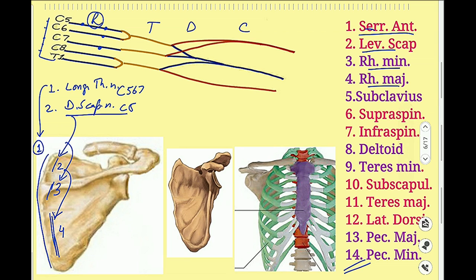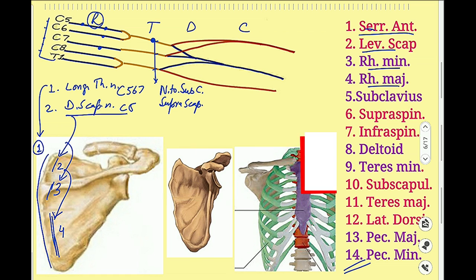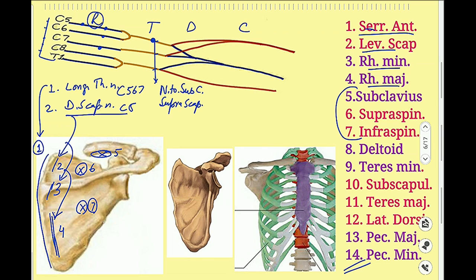From the trunks of the Brachial Plexus, only the upper trunk gives branches — two branches: the nerve to subclavius and the suprascapular nerve. The nerve to subclavius supplies only the subclavius muscle. The suprascapular nerve supplies both the supraspinatus and the infraspinatus muscle.